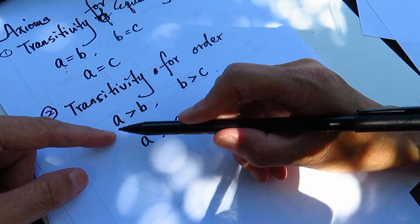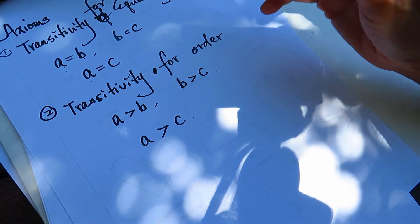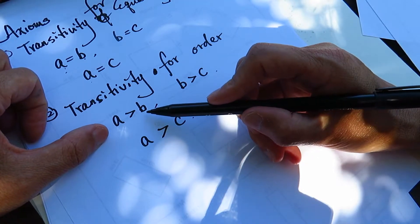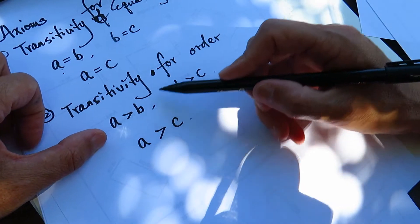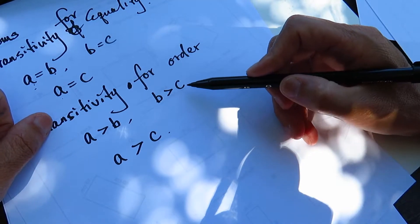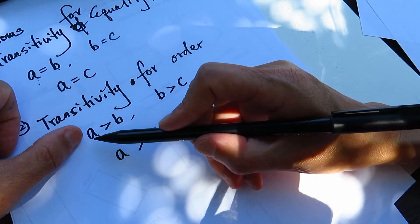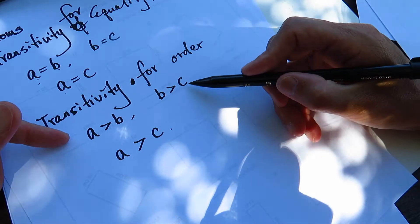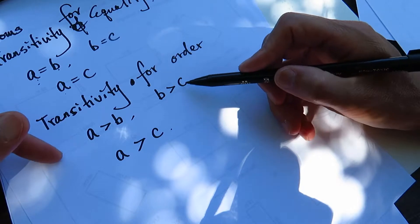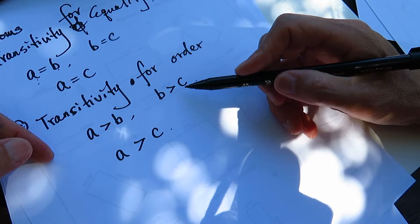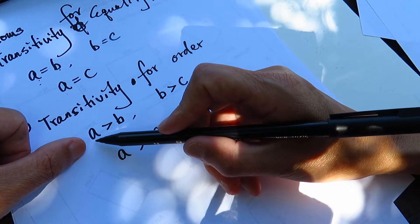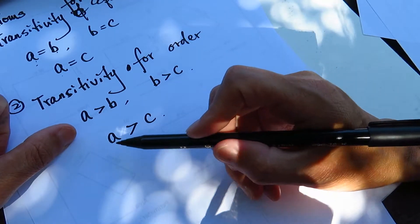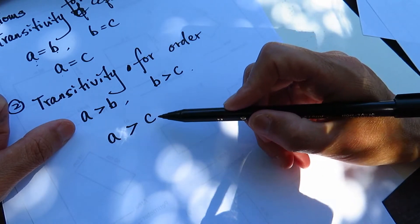Another example: I weigh 700 pounds — I'm a big, heavy weight. My name is Alice, and I am 700 pounds. Billy is 600 pounds. And Connie is 500 pounds. Alice is heavier than Billy. Billy is heavier than Connie. Of course, Alice is heavier than Connie.